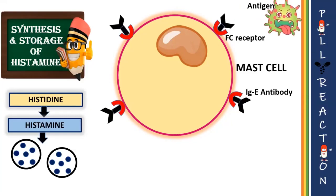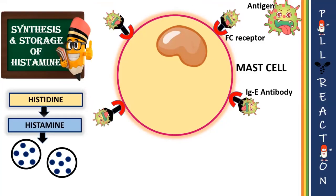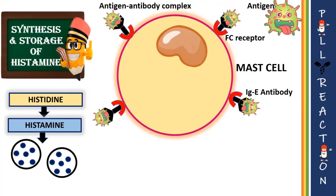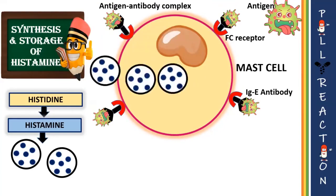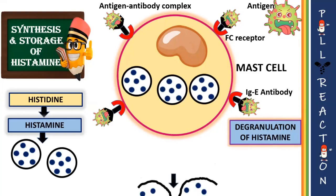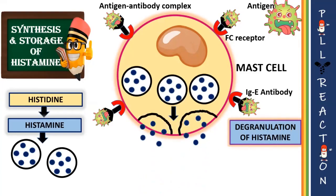When an appropriate antigen or foreign substance enters our body, it binds to the IgE antibody, resulting in an antigen-antibody complex. This complex will trigger the mast cell rapidly to release histamine from its granules.